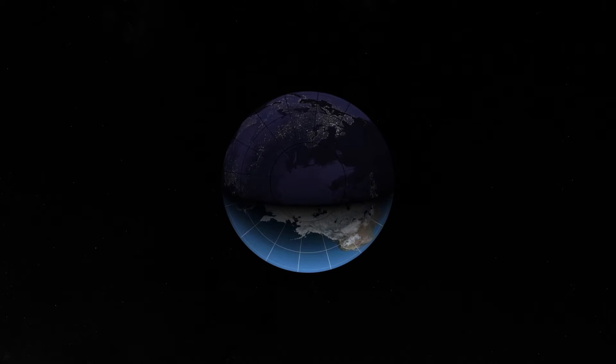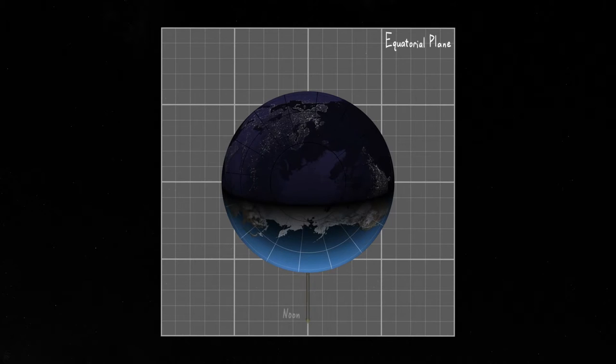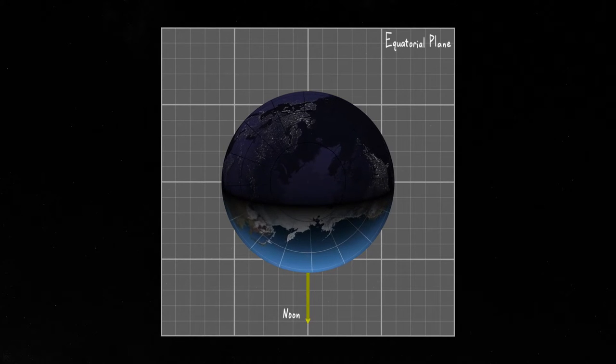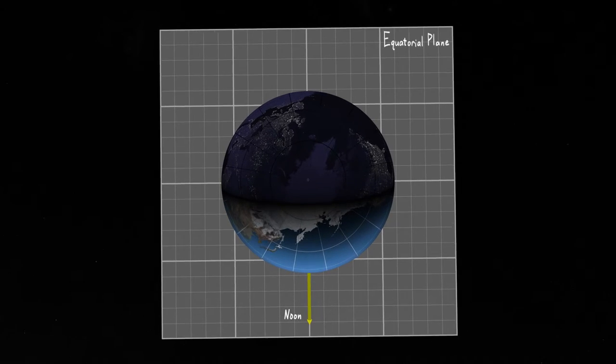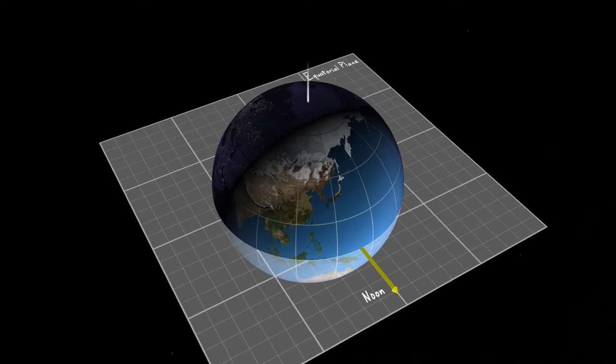We begin with the Earth rotating about its axis. A gray-gridded plane projected through the equator serves as a reference. In this top-down view, we can see the distinction between day and night sides of the Earth, emphasized here with a yellow noon vector.